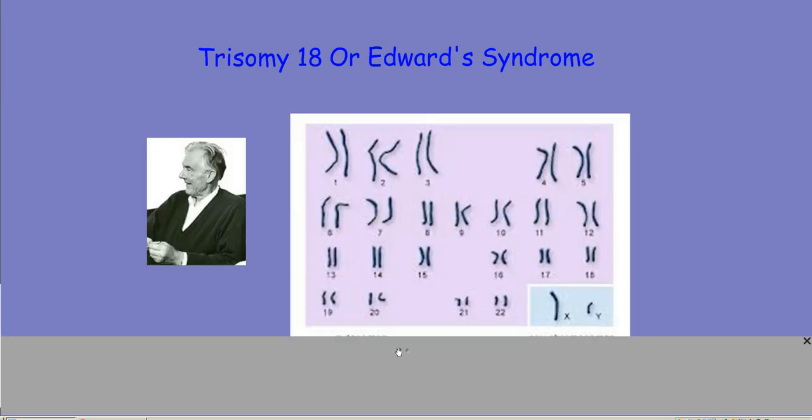This is a picture of John H. Edwards, who first discovered a patient with an extra chromosome on the 18th chromosome.